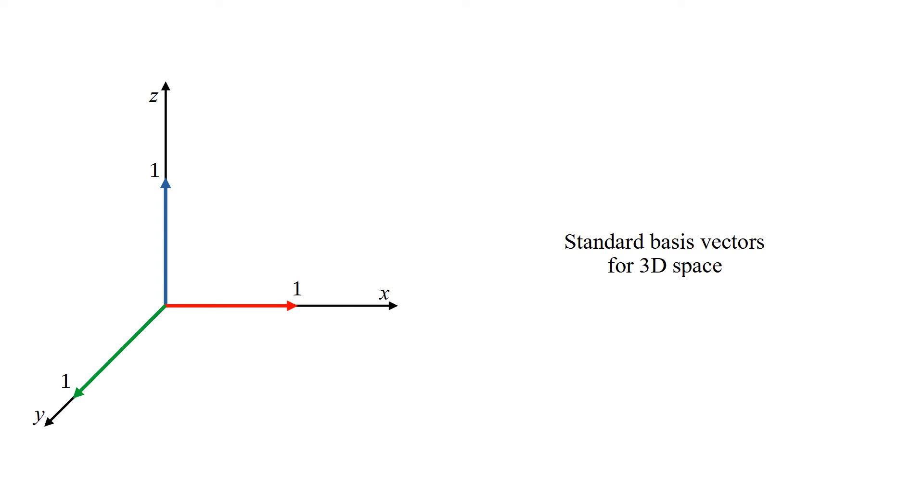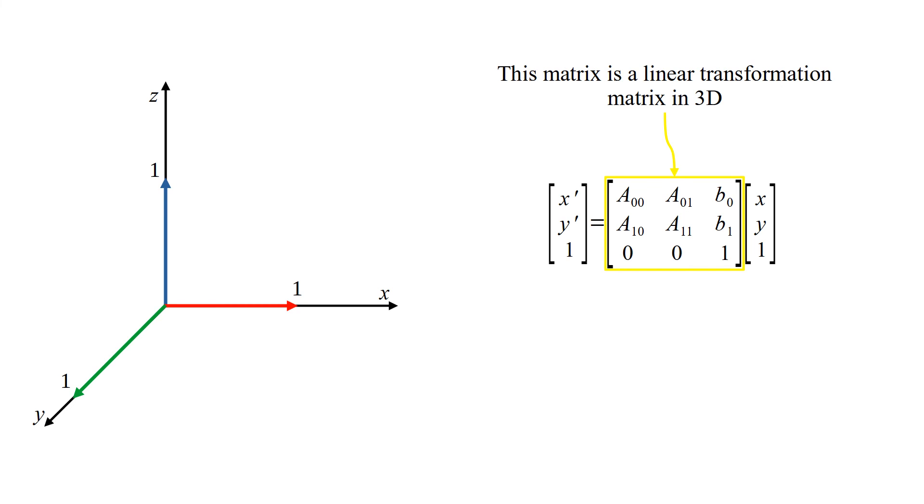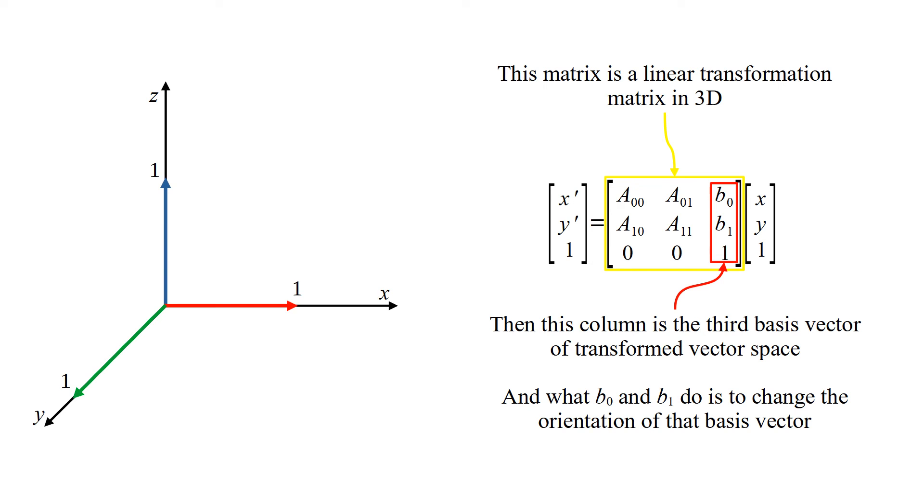These are standard basis vectors for 3D space. This matrix is a linear transformation matrix in 3D. Then this column is the third basis vector of transformed vector space. And what b0 and b1 do is to change the orientation of that basis vector.